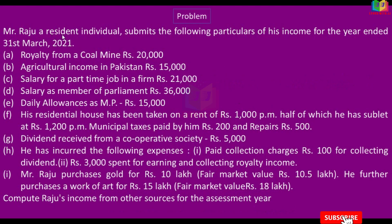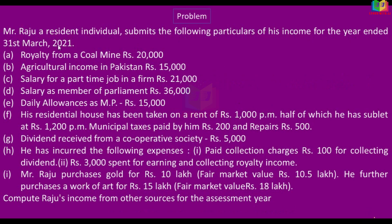Mr. Raju, a resident individual, submitted the following particulars of his income for the year ended 31st March 2021. Royalty from a coal mine, Rs. 20,000. This is royalty income.